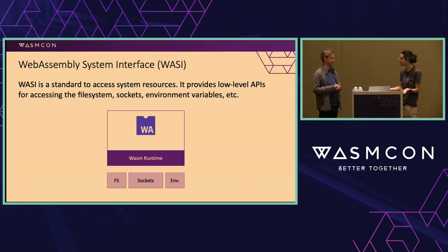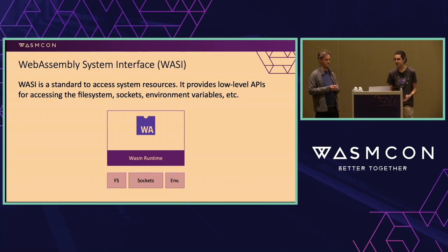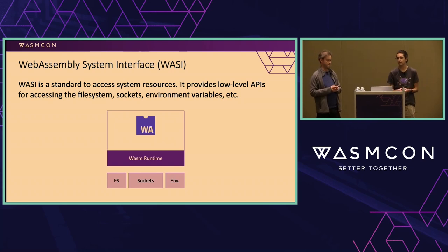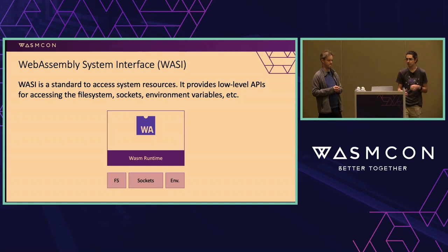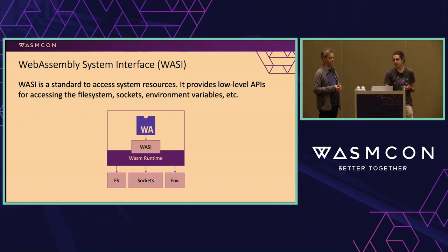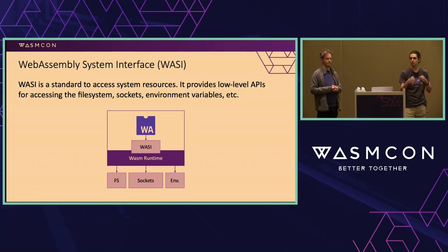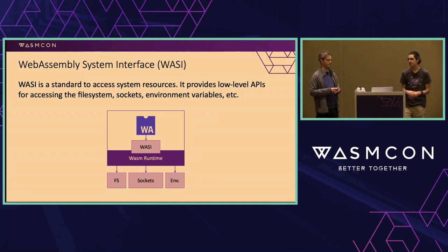With containers, you have those resources available because of how containers work. But in WebAssembly, you don't have that information by default because the modules are fully isolated. The way you access resources is using WASI — a set of APIs that allows your WebAssembly module to read files, access sockets, and environment variables.